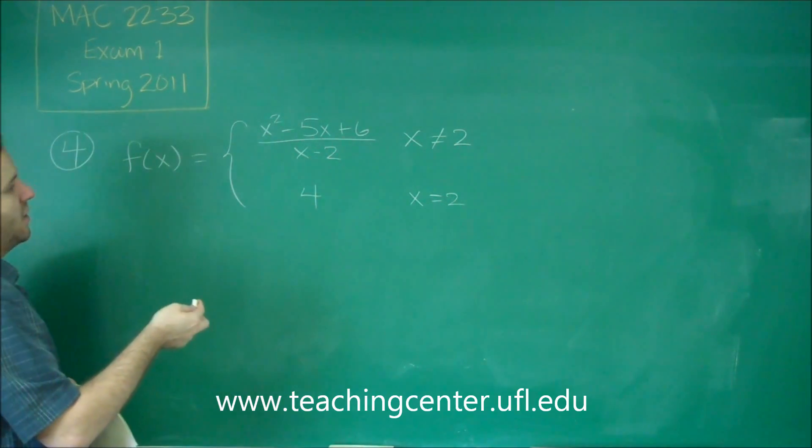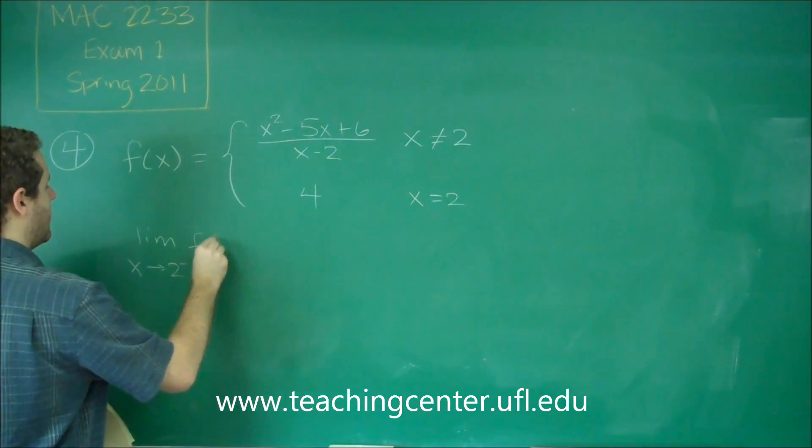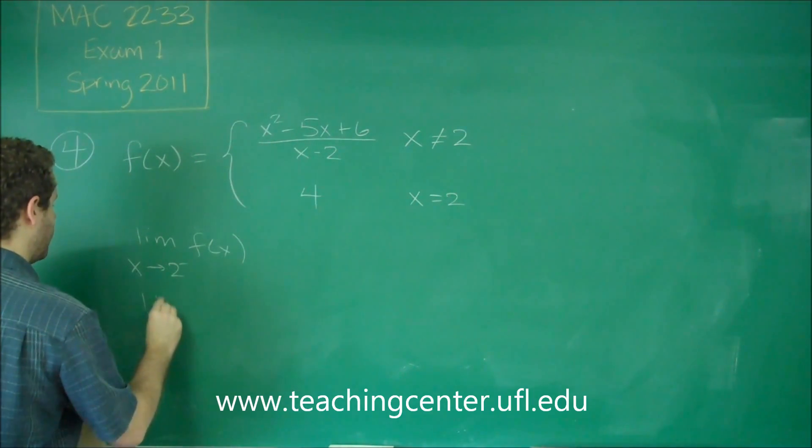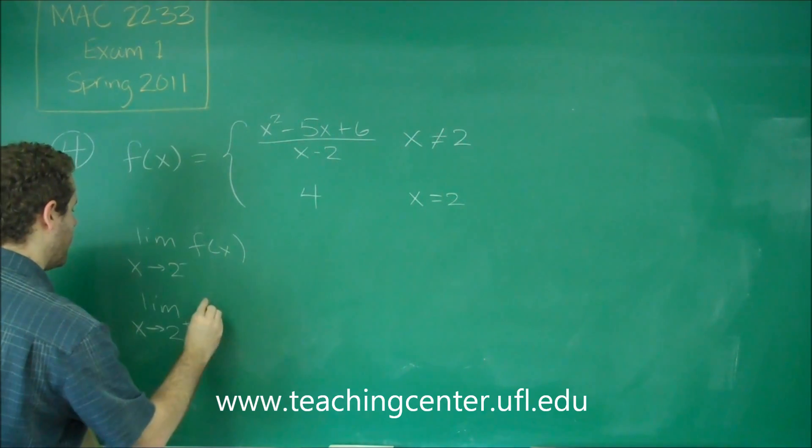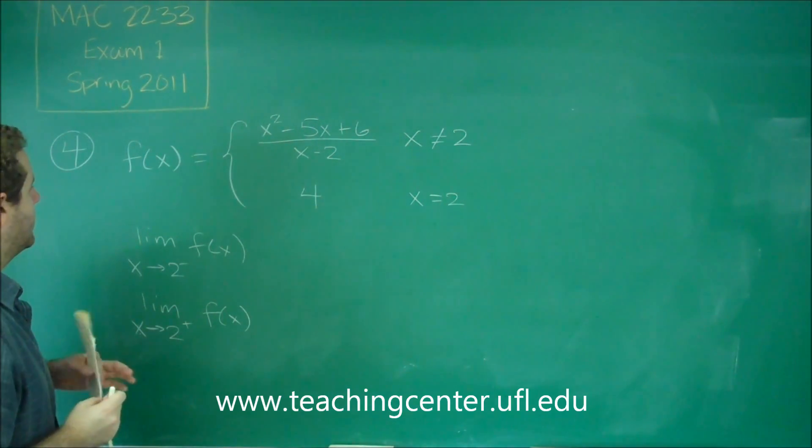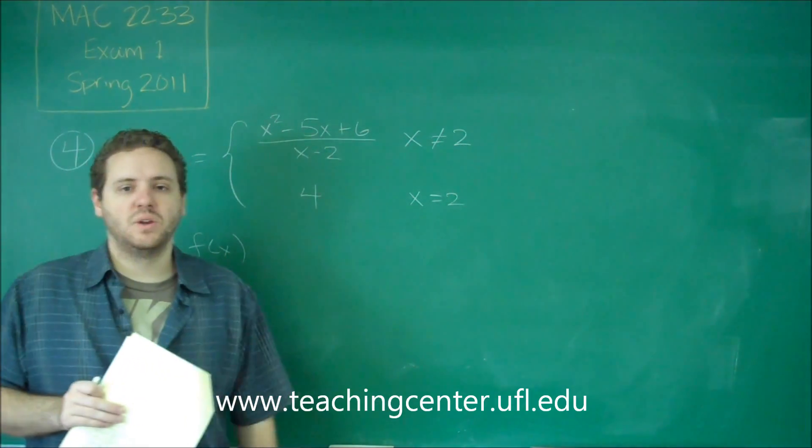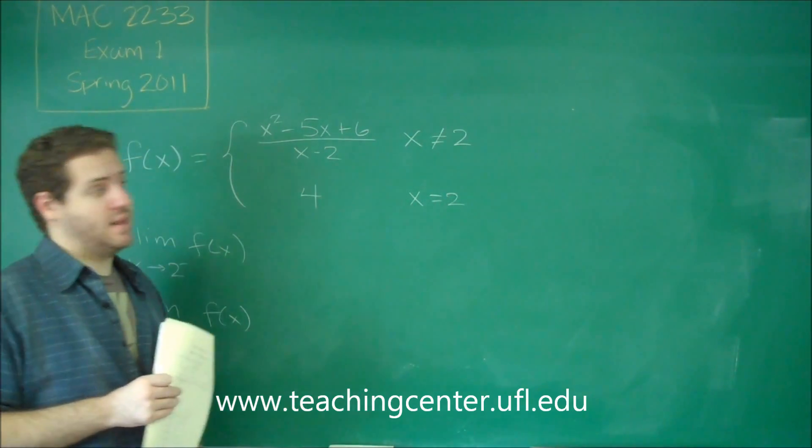So what we need to do is figure out what the limits as x approaches 2 from the left of f of x are, and the limit as x approaches 2 from the right of f of x. Well, to figure those out, the easiest way would be if we could just plug in 2 to that function and see what we get. However, if we try that, the denominator is 0, and that's bad. We need to try to factor that first.